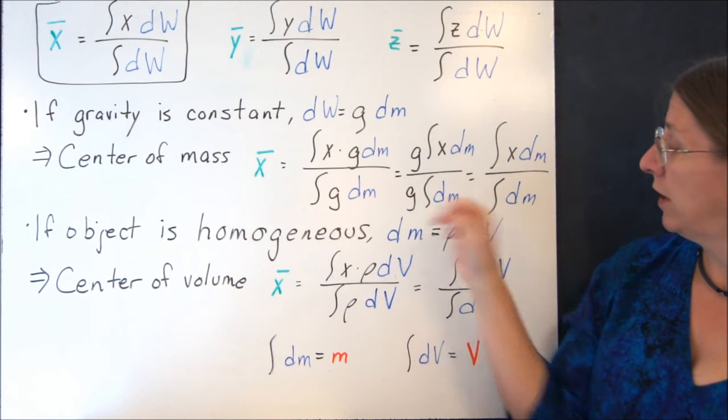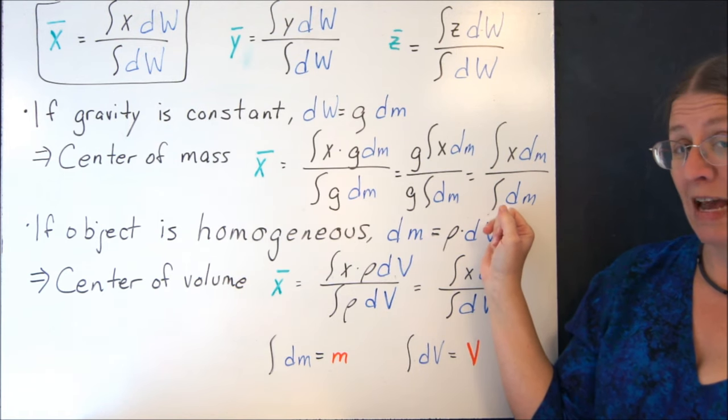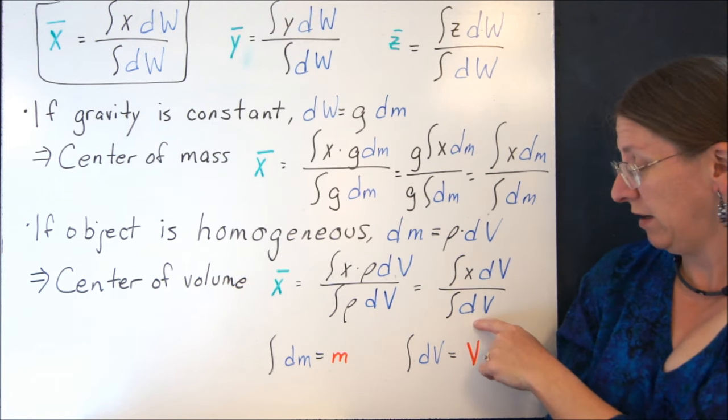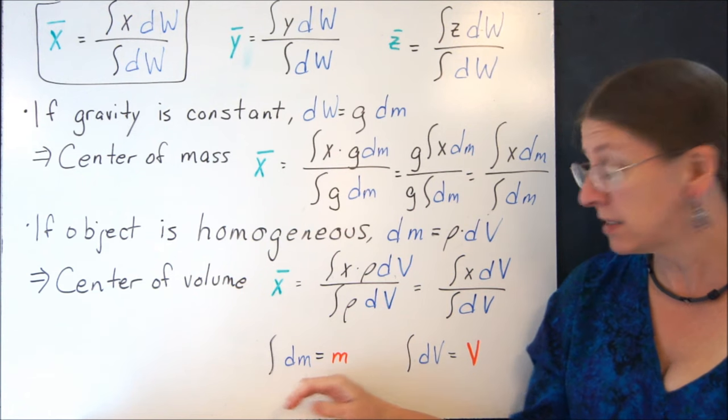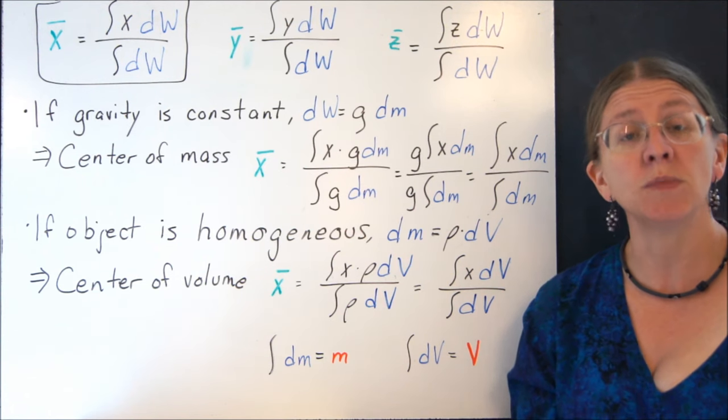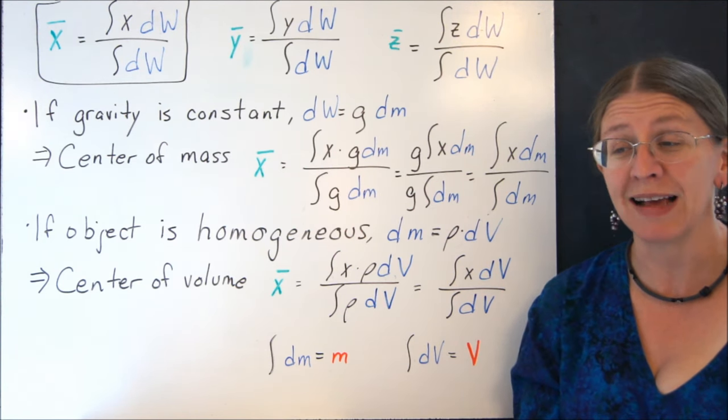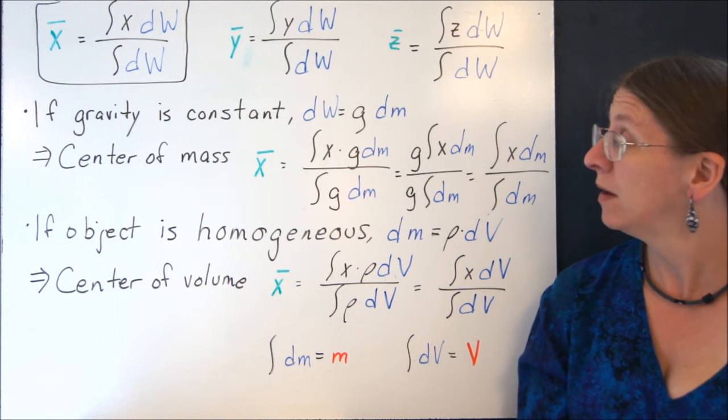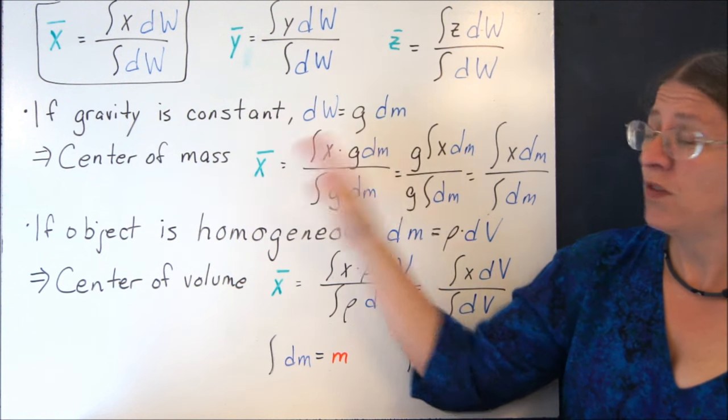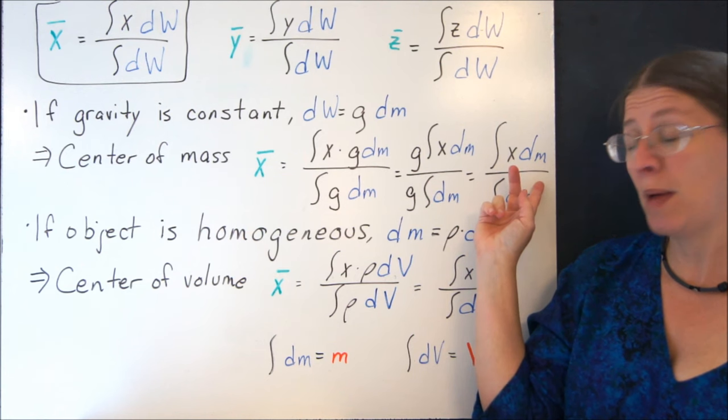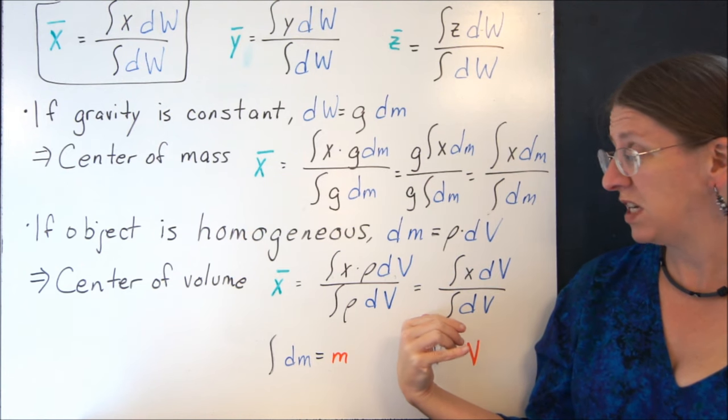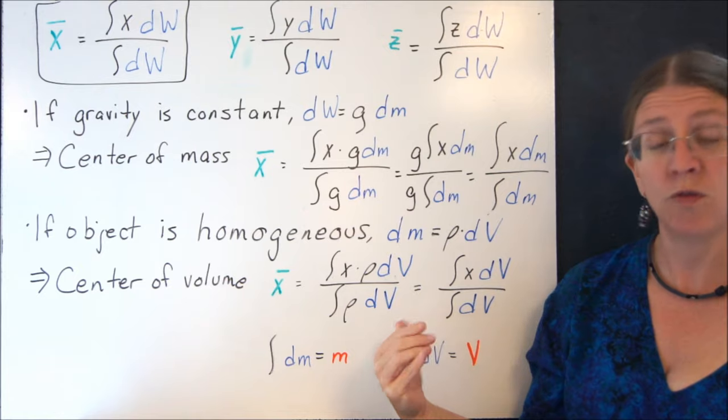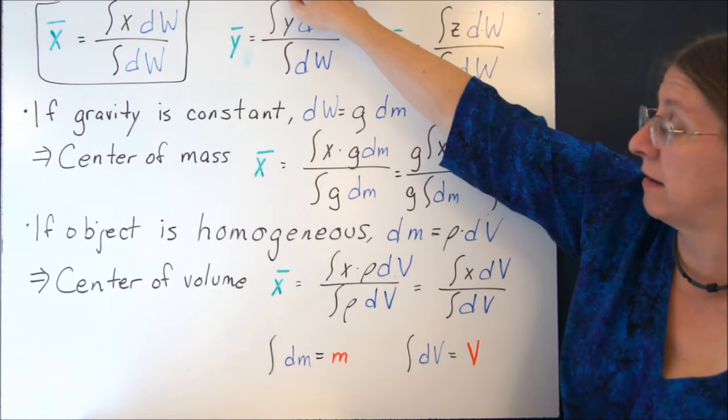Notice that this denominator here, the integral dm and the integral dV, those are the total mass and the total volume. So sometimes they're actually given those and you don't have to do an integral at all. Same thing with y for the center of mass and z for the center of volume. The forms of these equations are exactly the same.